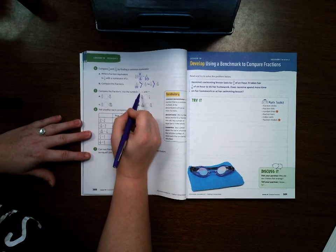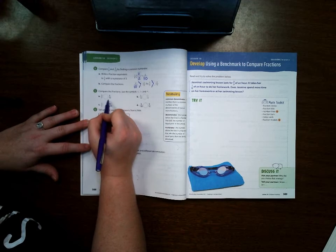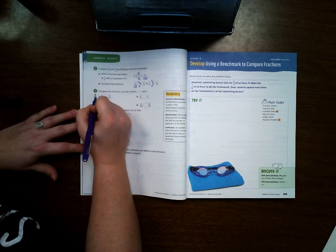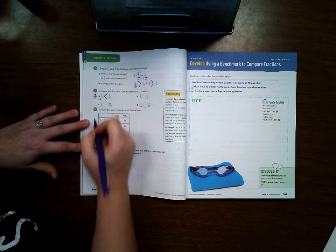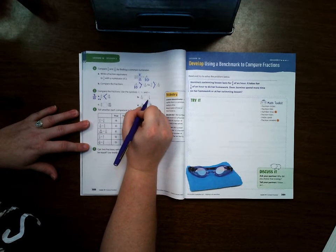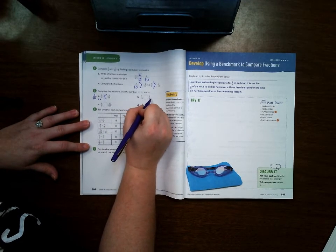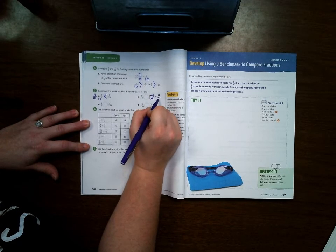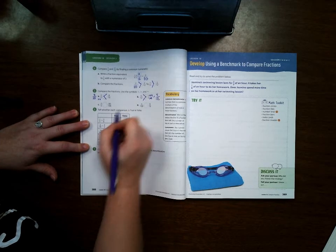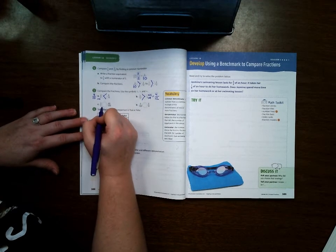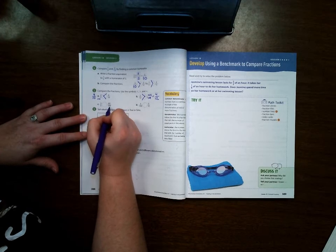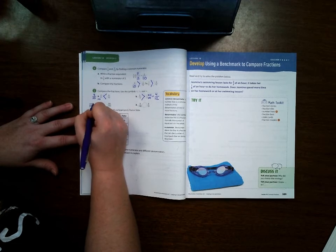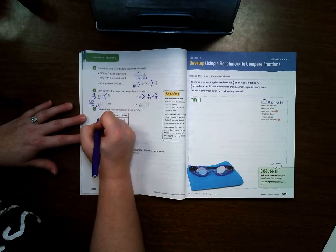Compare the fractions using the symbols. This is 2/5 so I'm going to change it to tenths. So if I multiply it by 2, I would get 4/10. Well, 8/10 is bigger. Down here I'm going to try to get 3 to 12. So I can do that by multiplying by 4, which would be 4/12. And 5 is bigger than 4. Down here I'm going to get 5 to 100. And I do that by multiplying by 20. So 3 times 20 would be 60. So those are equal.